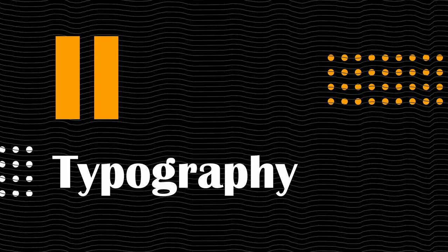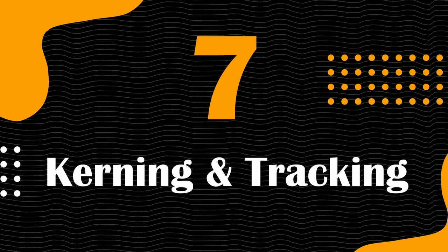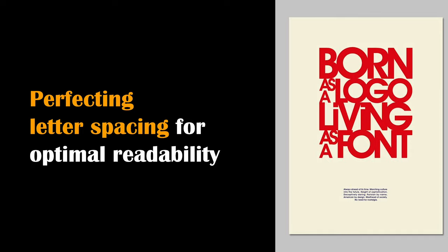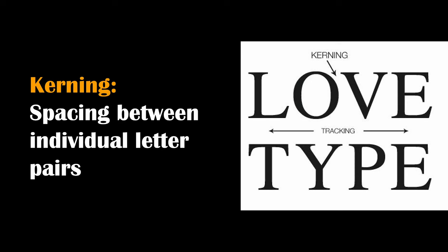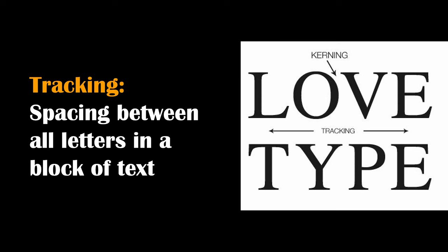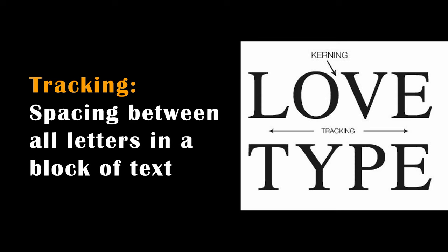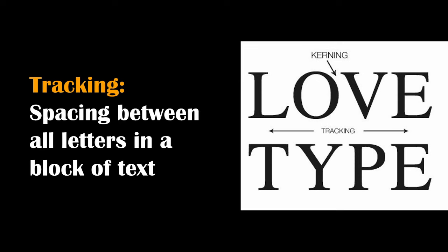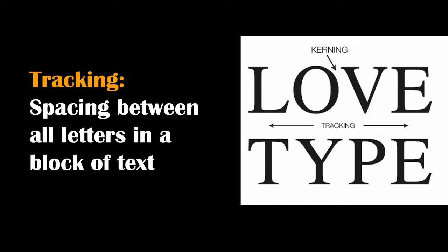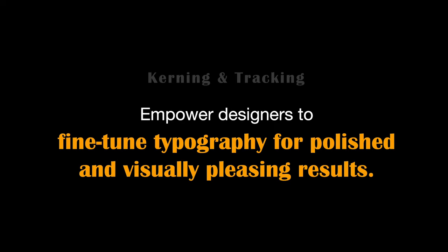Now let's move on to advanced typography. Kerning and tracking are all about perfecting letter spacing for optimal readability. Kerning focuses on adjusting the space between individual letter pairs to eliminate awkward gaps or collisions, while tracking uniformly alters the overall spacing between all letters in a block of text, influencing text density and legibility. These tools empower designers to fine-tune typography for polished and visually pleasing results.